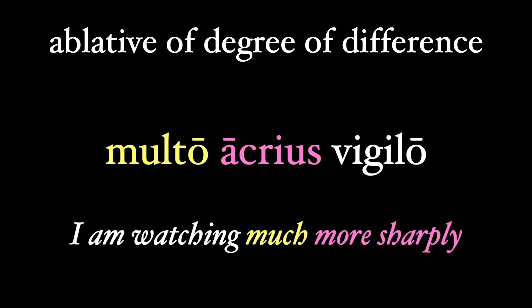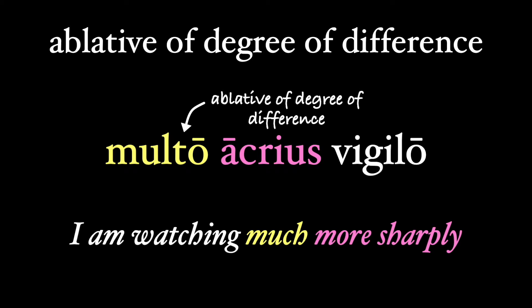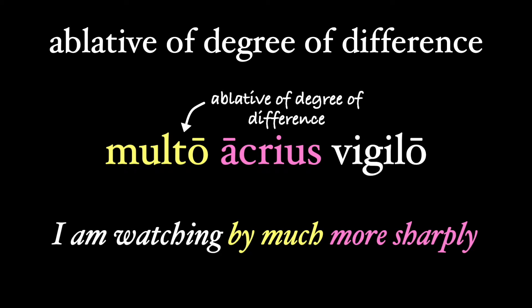Let's start off with an example: multo acrius vigilo — I am watching much more sharply. Multo here is our ablative, from the substantive multum meaning 'much.' We could translate this literally as 'by much' or 'by far' as a way of illustrating the ablative, and it's qualifying the comparative adverb acrius — not just 'more sharply,' but much more so.